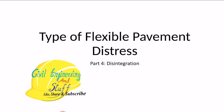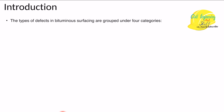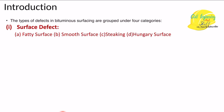Hello everyone, welcome to Civil Engineering and Stuff. In today's video we will be discussing another type of pavement distress - disintegration. This is Part 4 of the broad topic 'Types of Distress in Flexible Pavement.' Before this, we discussed different types of distress in the previous parts. In Part 1, we discussed surface defects: fatty surface defect, smooth surface defect, sticking, and hungry surface defect.